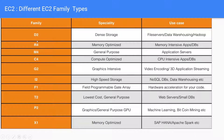The D family is for dense storage where the normal use case is file servers, data warehousing, Hadoop-based clusters, etc. R series is for memory optimized use cases like memory intensive applications, databases, etc. T series and M series are for general purpose use cases. G is for graphics intensive applications. I is for high speed storage, for example, NoSQL databases, data warehousing, etc.